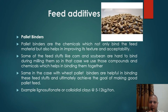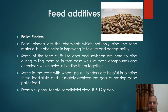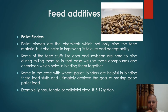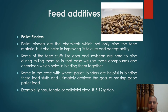Pellet binders are chemicals which not only bind the feed material but also help in improving its texture and acceptability. Some feedstuffs like corn and soybean are hard to bind during milling, so compounds and chemicals are used to help bind them together — the same applies to wheat. Pellet binders are helpful in binding these feedstuffs to achieve the goal of making good pellet feed. Examples of pellet binders are lignosulfonate or colloidal clays at the rate of 5 to 12 kg per tonne.